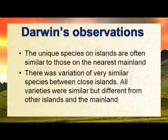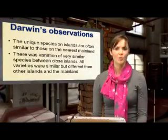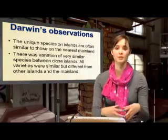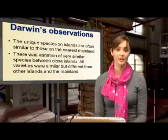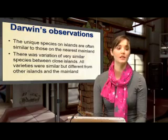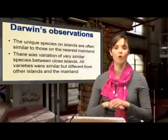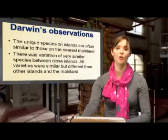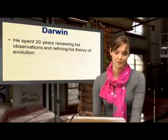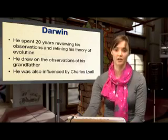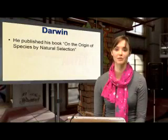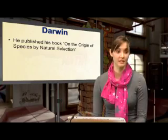He saw that unique species on islands are often similar to those on the nearest mainland, and that there was variation of very similar species between close islands — all varieties were similar but different from other islands and the mainland. He started to realize that it wasn't just a specific individual organism adapting; it was populations. There was biodiversity within one area. He took 20 years to review his observations, drew on his grandfather's work and biologist Charles Lyell, and eventually published his book On the Origin of Species by Natural Selection, introducing natural selection and survival of the fittest.